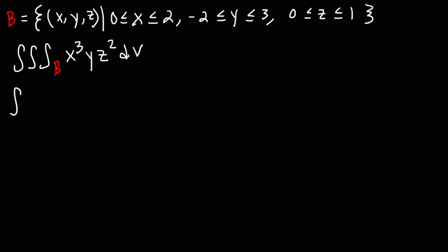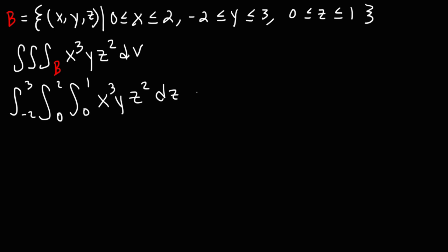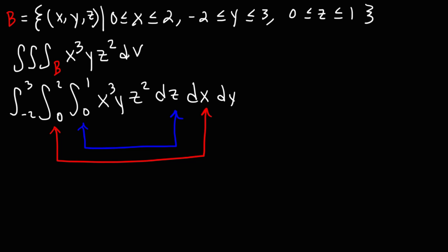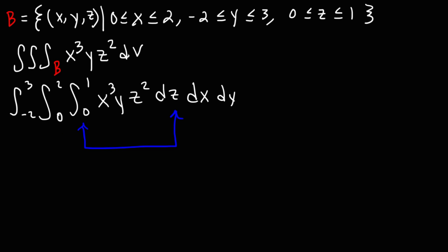I need to write the limits of integration. I'm going to start with y and save that for last. Then I'm going to write the x values and then the z values. Now I'm going to replace dv with dz followed by dx followed by dy. So 0 and 1 are the z values — that's why z has to go first. The second integral contains the x values, and the first one, which is going to be the last one we use, contains the y values. Make sure that dz corresponds to the appropriate z values.